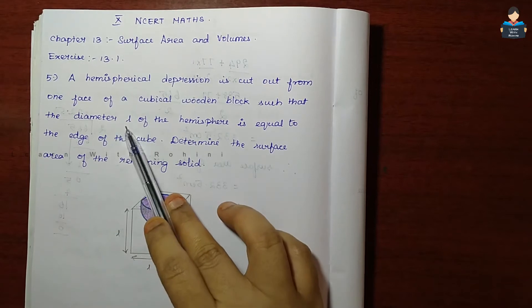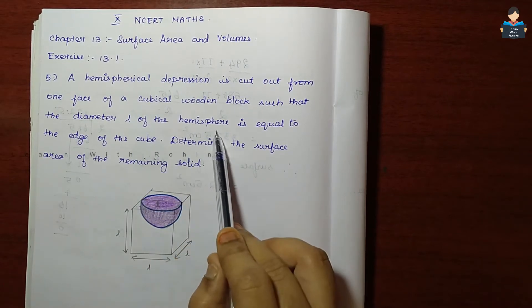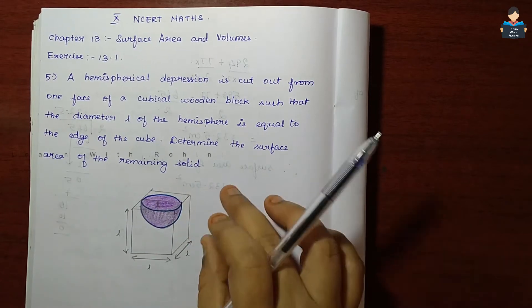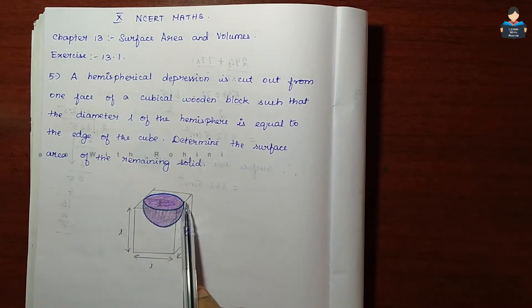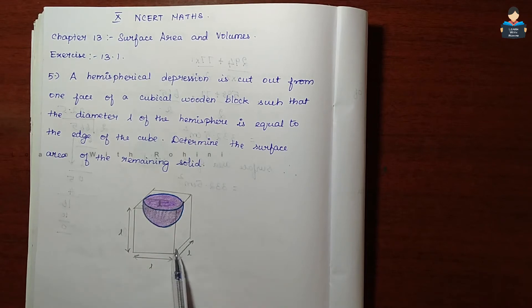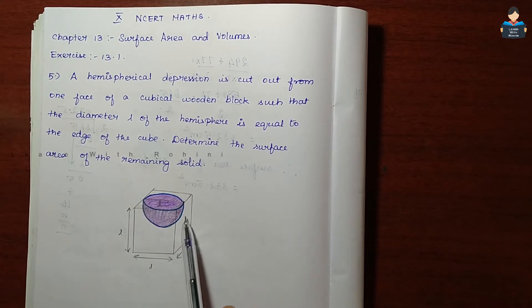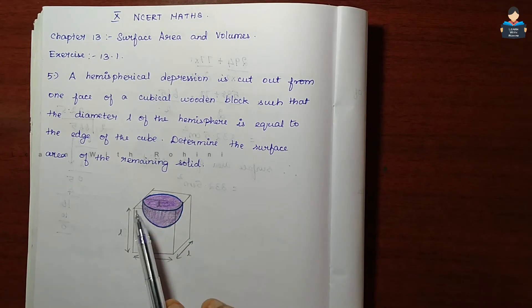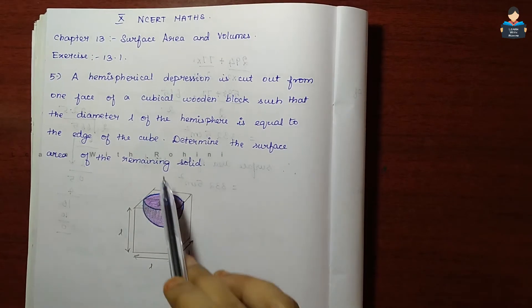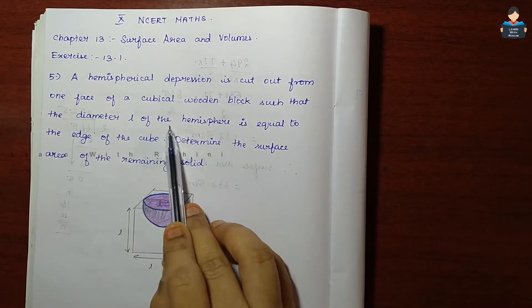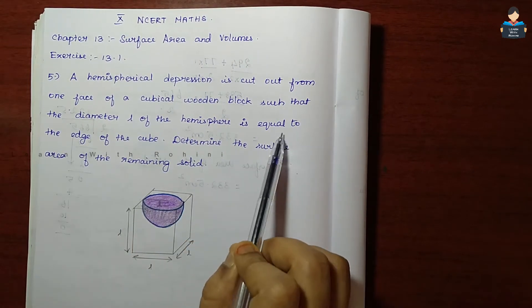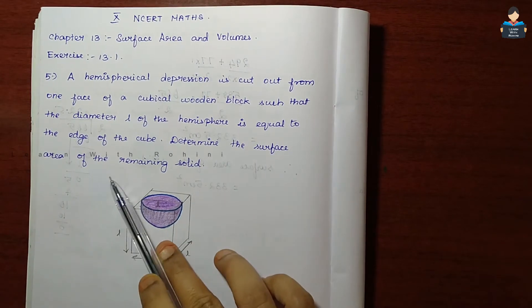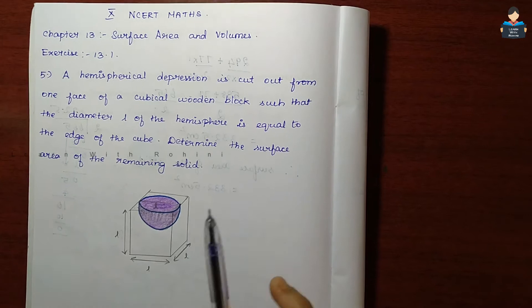The diameter of the hemisphere is equal to the edge of the cube. We need to determine the surface area of the remaining solid.